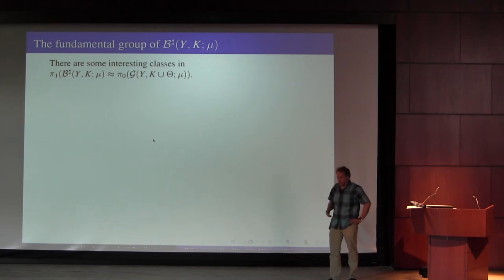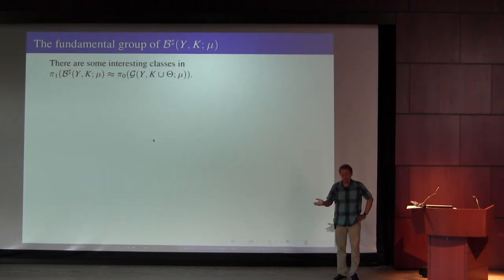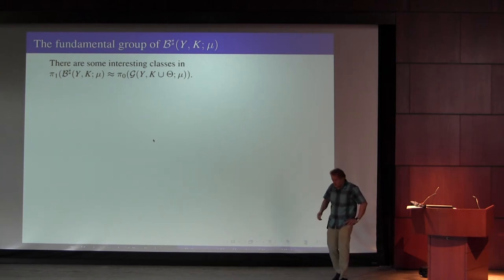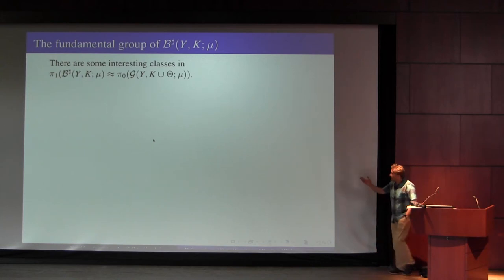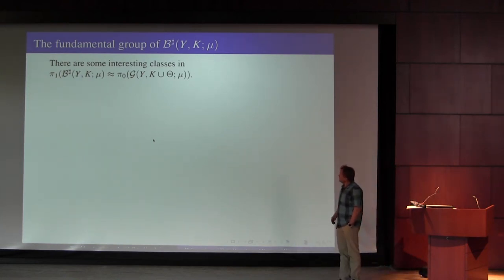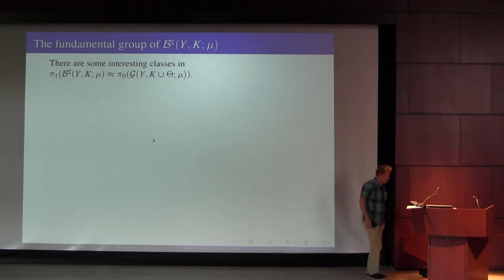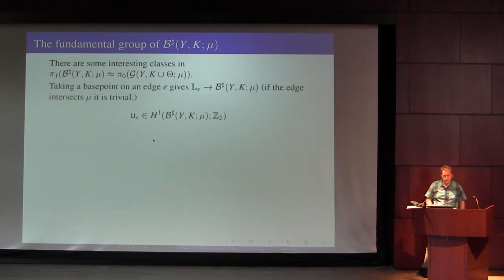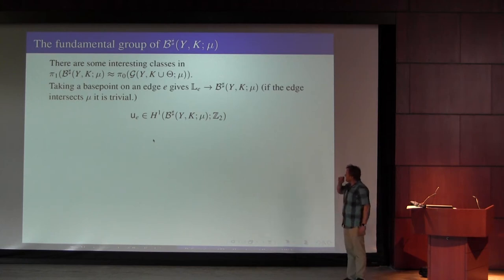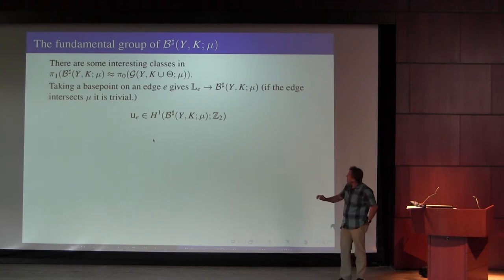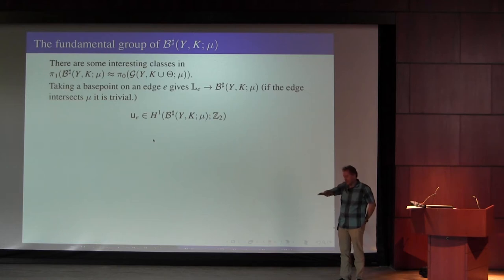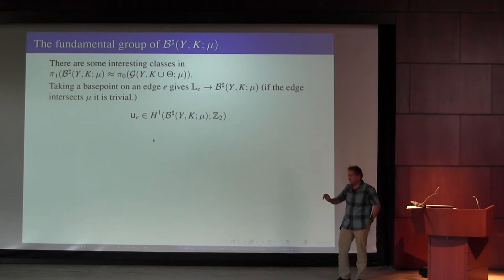What we want to do is — with finite-dimensional Morse theory, if you have a finite-dimensional manifold with non-trivial fundamental group, then you can look at the Morse homology with twisted coefficients. That's what we're going to do. The fundamental group of B-sharp is π₀ of the gauge group, so there are some things to look at there, which we're going to use in different ways — one of which already appeared in the J-sharp story.